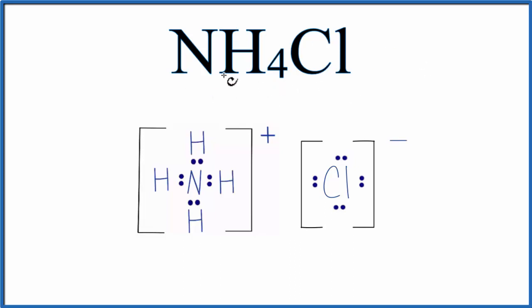So we look at each of the elements: nitrogen, that's a non-metal, hydrogen, non-metal, and chlorine, that's also a non-metal. So we have all non-metals, so we would expect this to be a covalent compound because it's made up of non-metals.